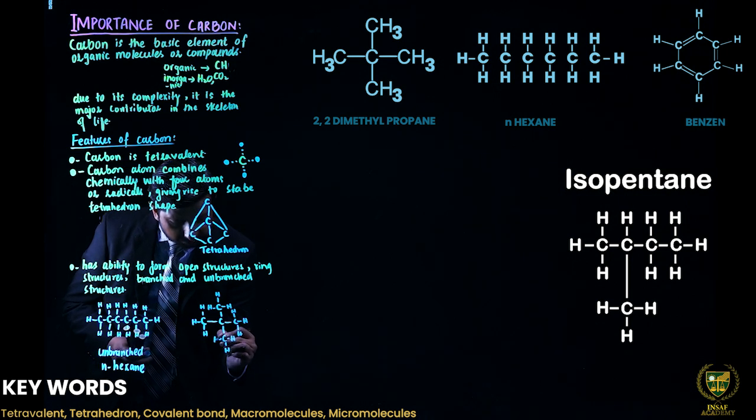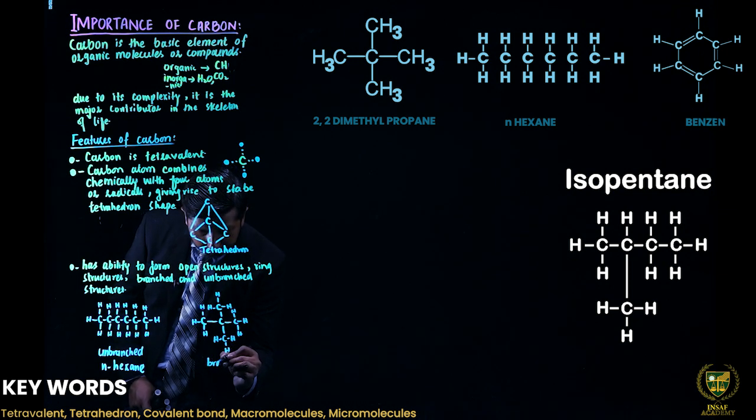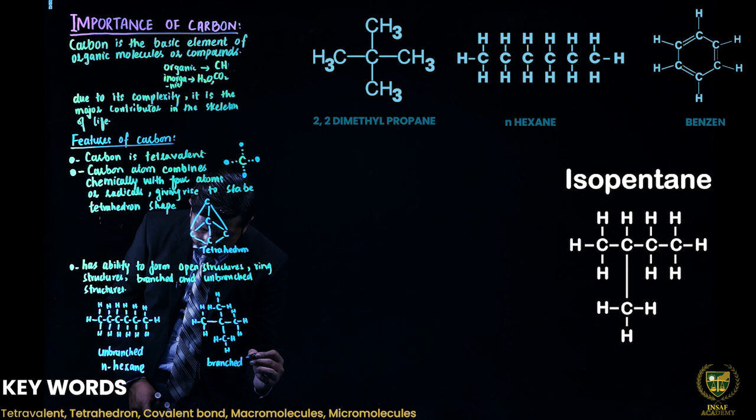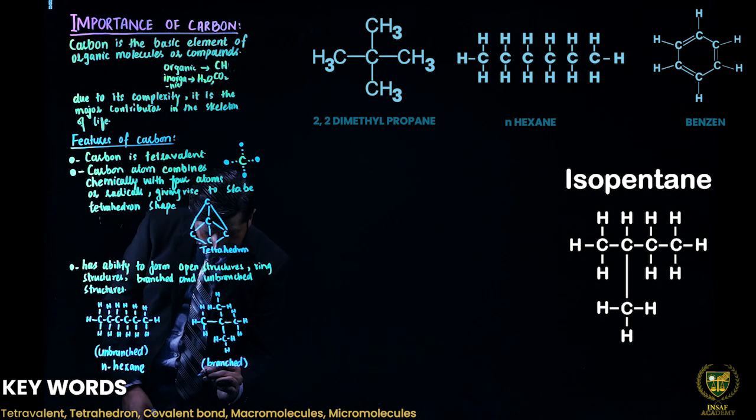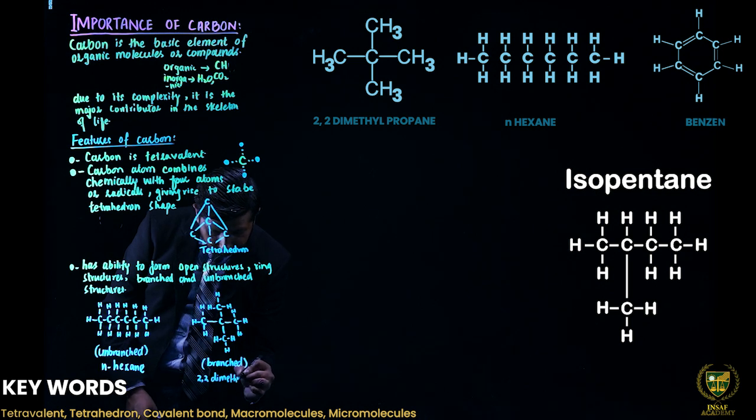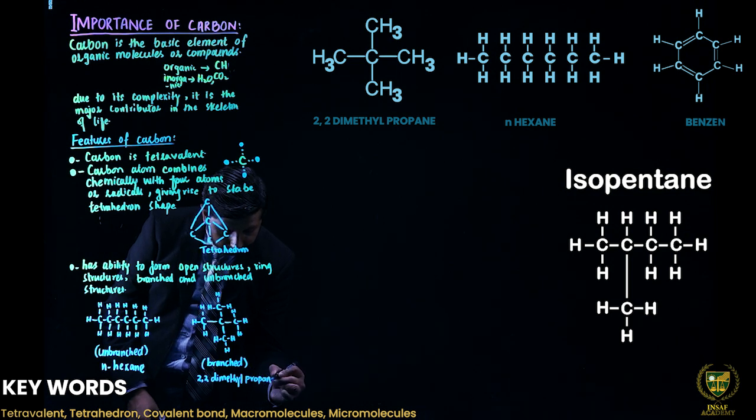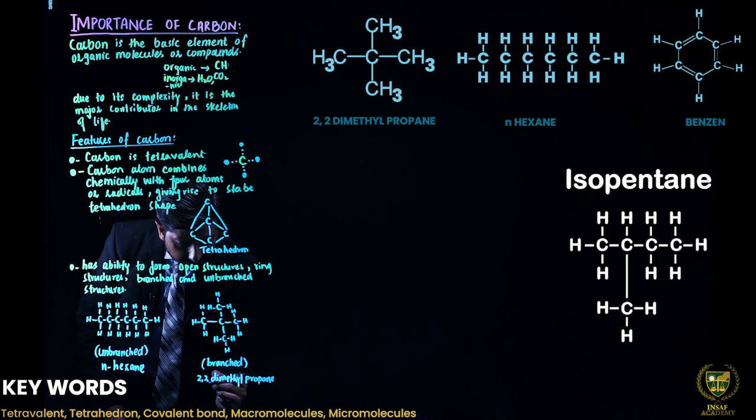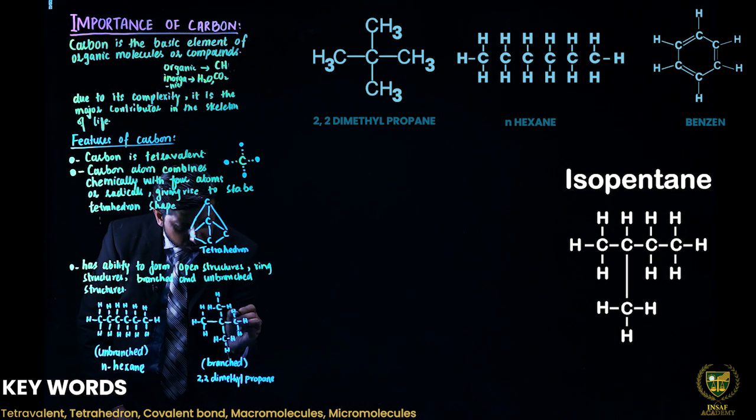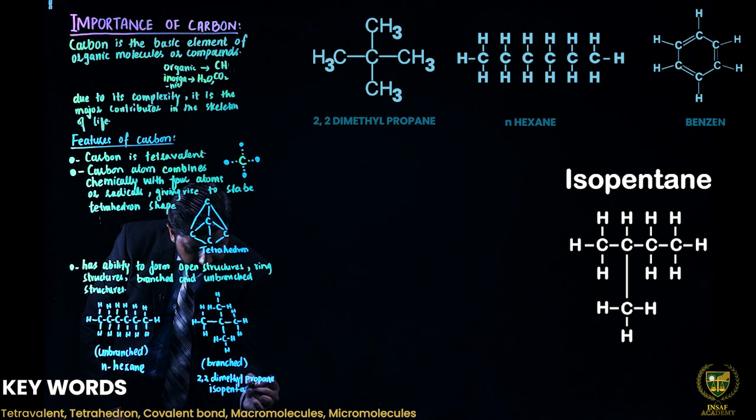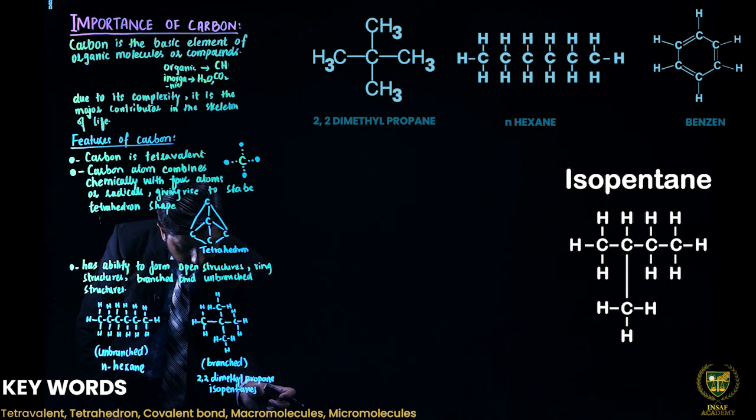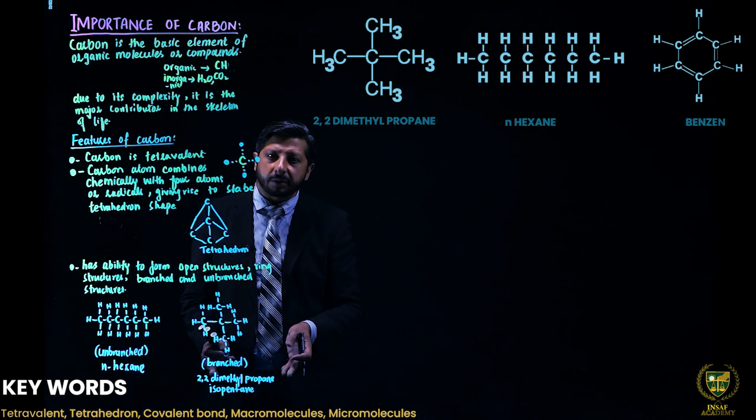It also forms branched structure. This is the branch structure. This is basically 2,2-dimethyl propane. You can also call it isopentane with five carbons. It is also called isopentane, that is a branched structure.